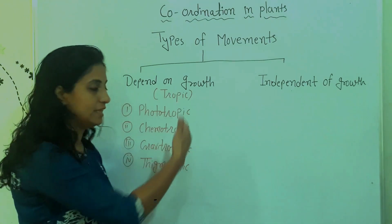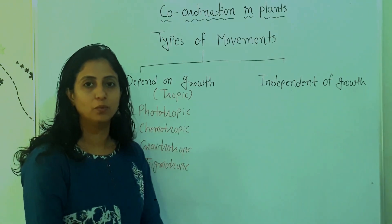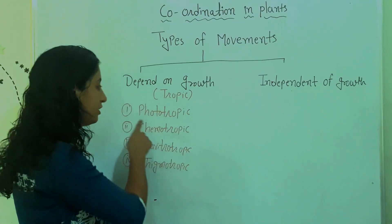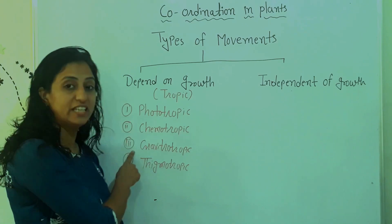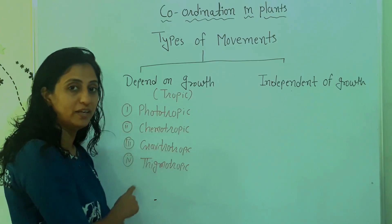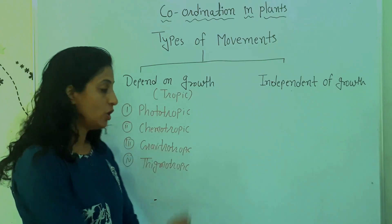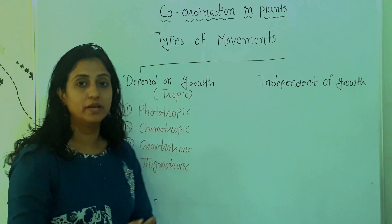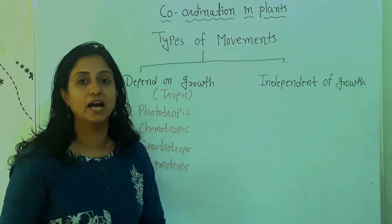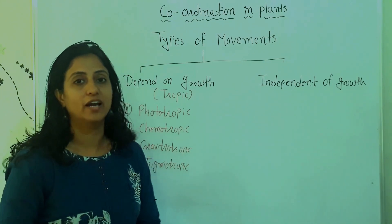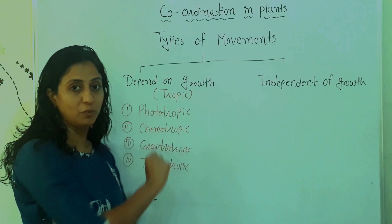So students, these are the different types of tropic movement: phototropic movement, chemotropic movement, geotropic movement, and thigmotropic movement. All these movements promote the growth of the plant, which is why they are known as tropic movements.